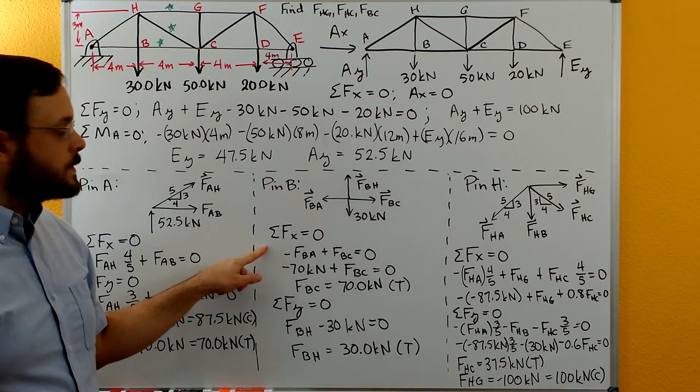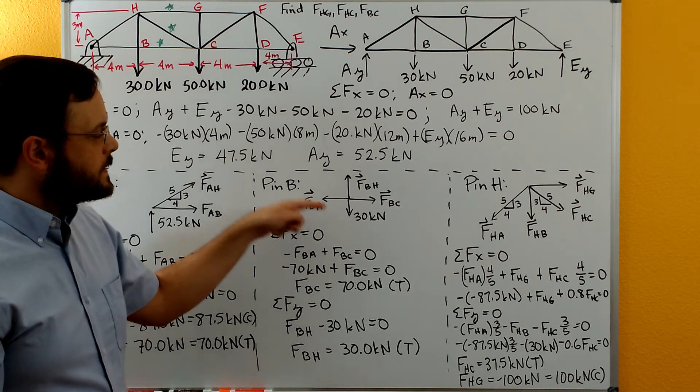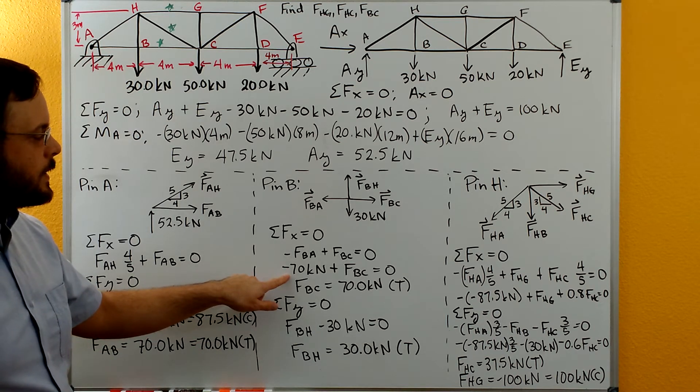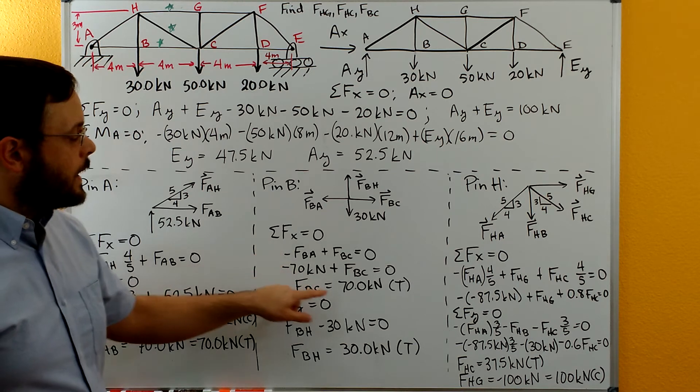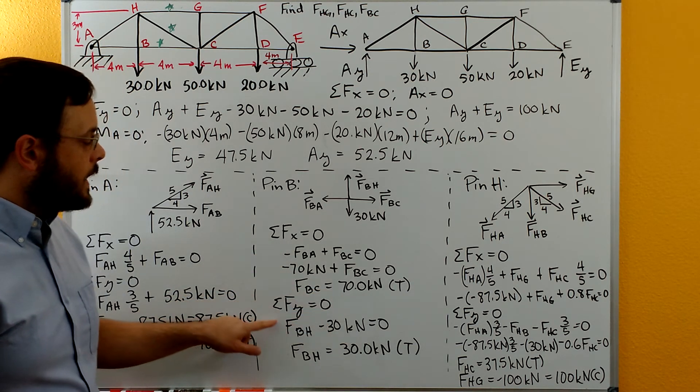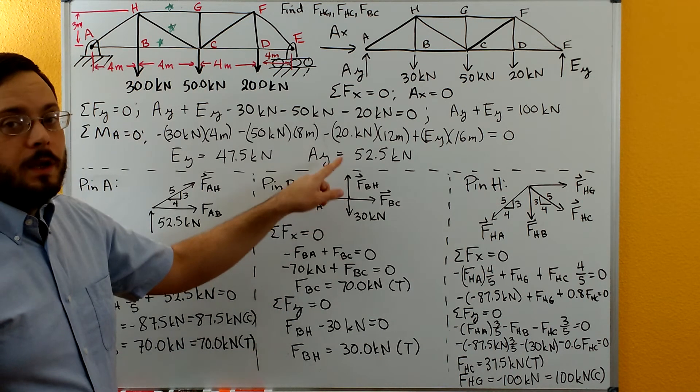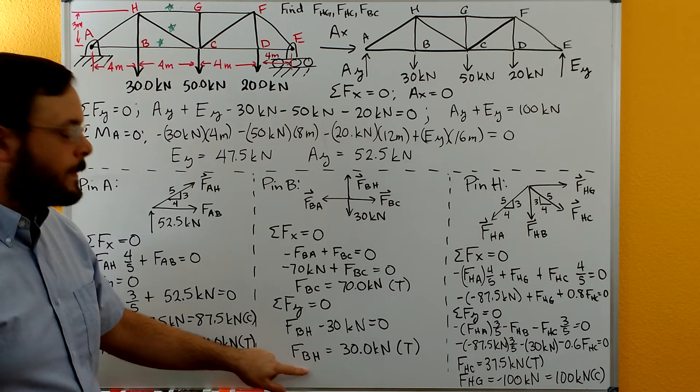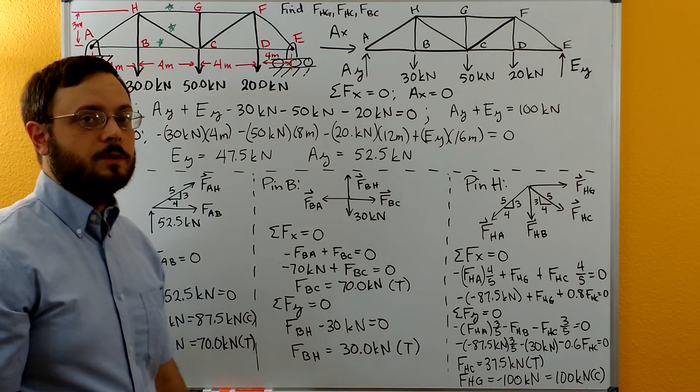We do our sum of forces in X: minus FAB plus FBC equals zero. We can plug in the positive 70 that we got there. We have the negative sign in front from the direction here. We get FBC equals 70 kilonewtons in tension. Then we can do our sum of forces in Y. We get FBH positive minus the 30 kilonewtons negative equals zero. We get FBH equals 30 kilonewtons. It's positive so it must be in tension.